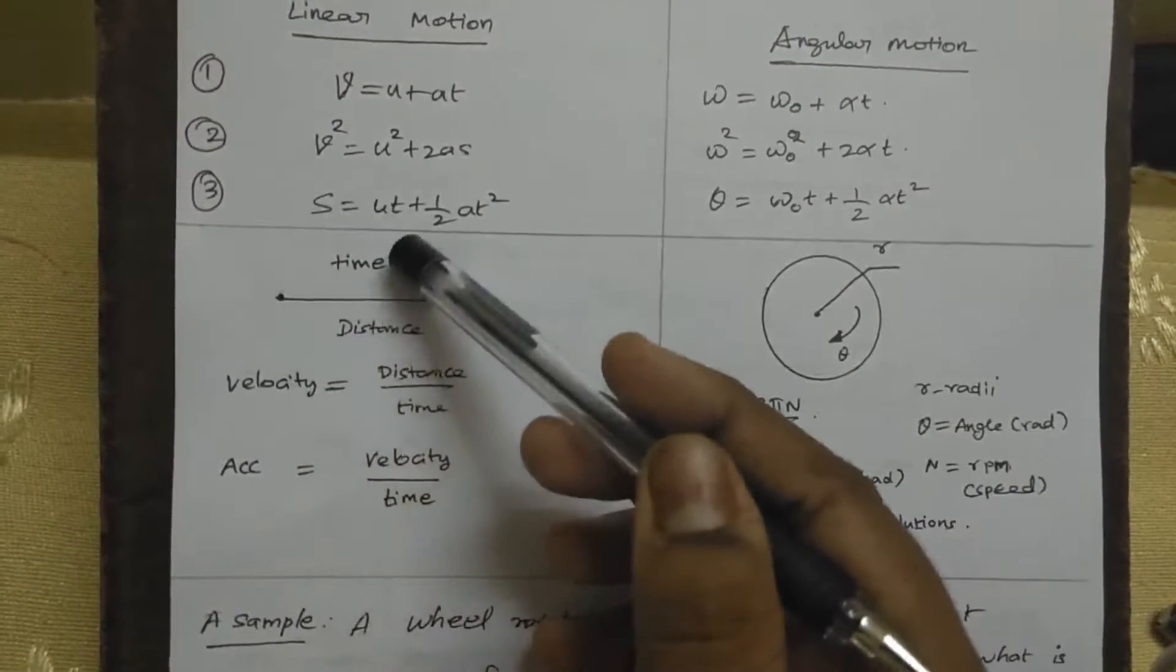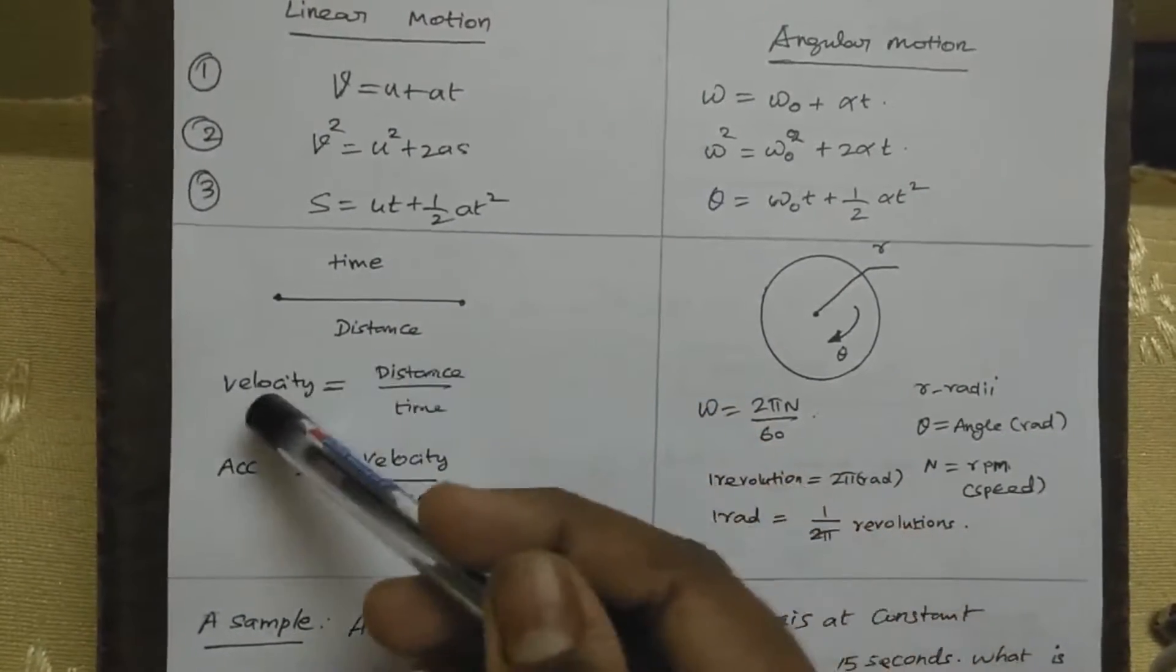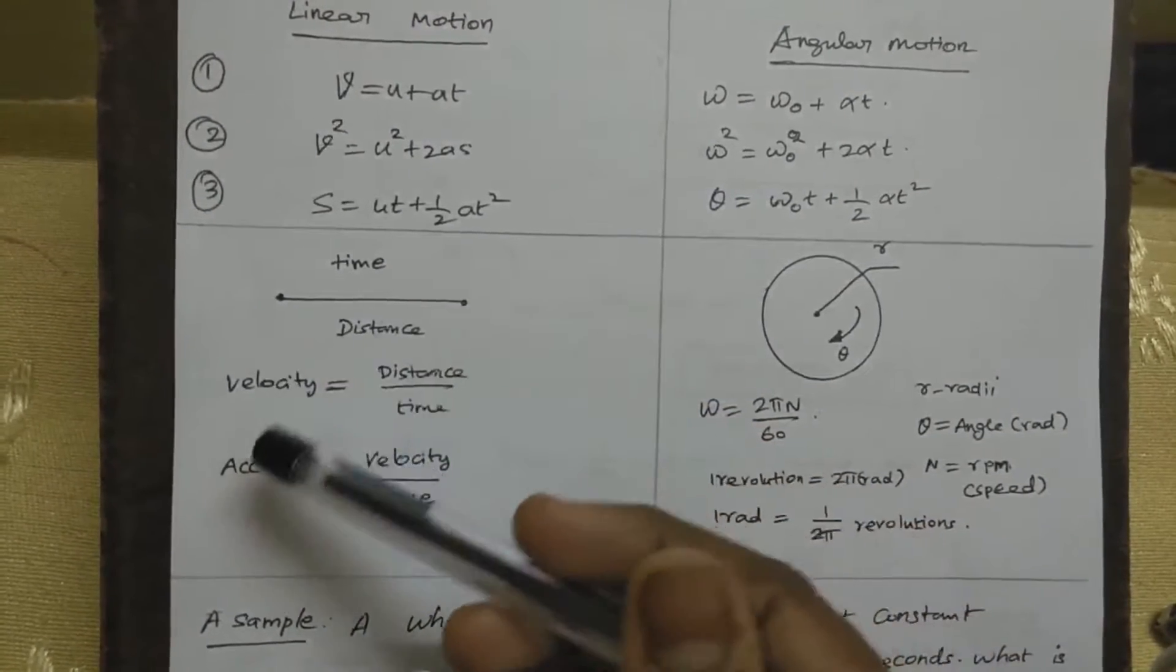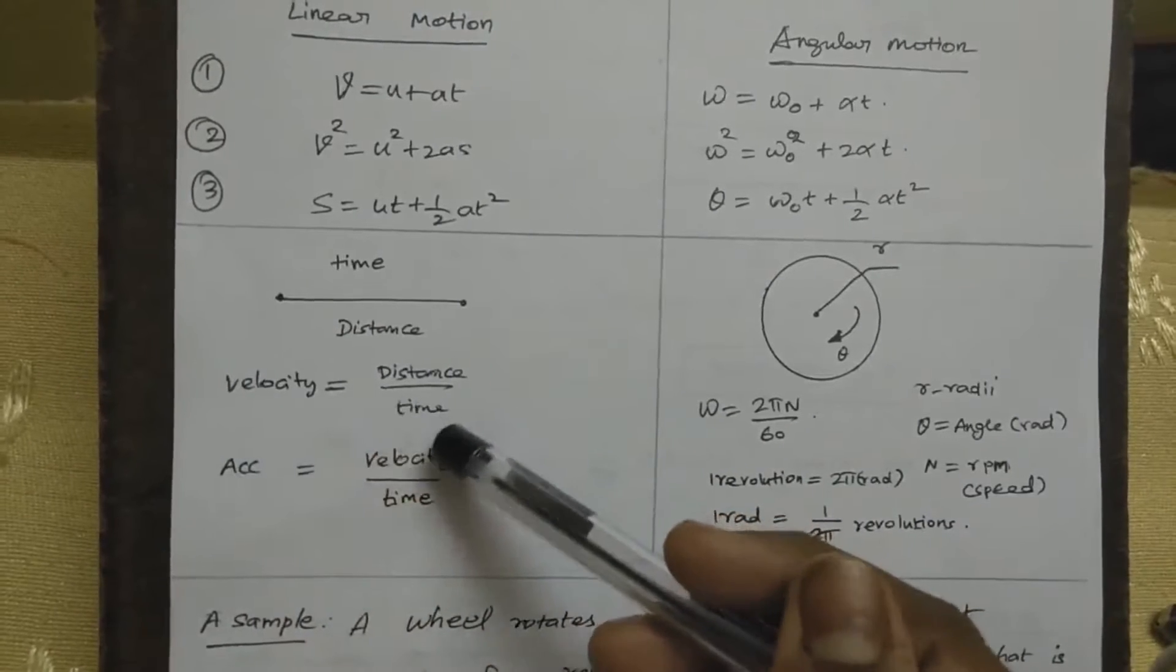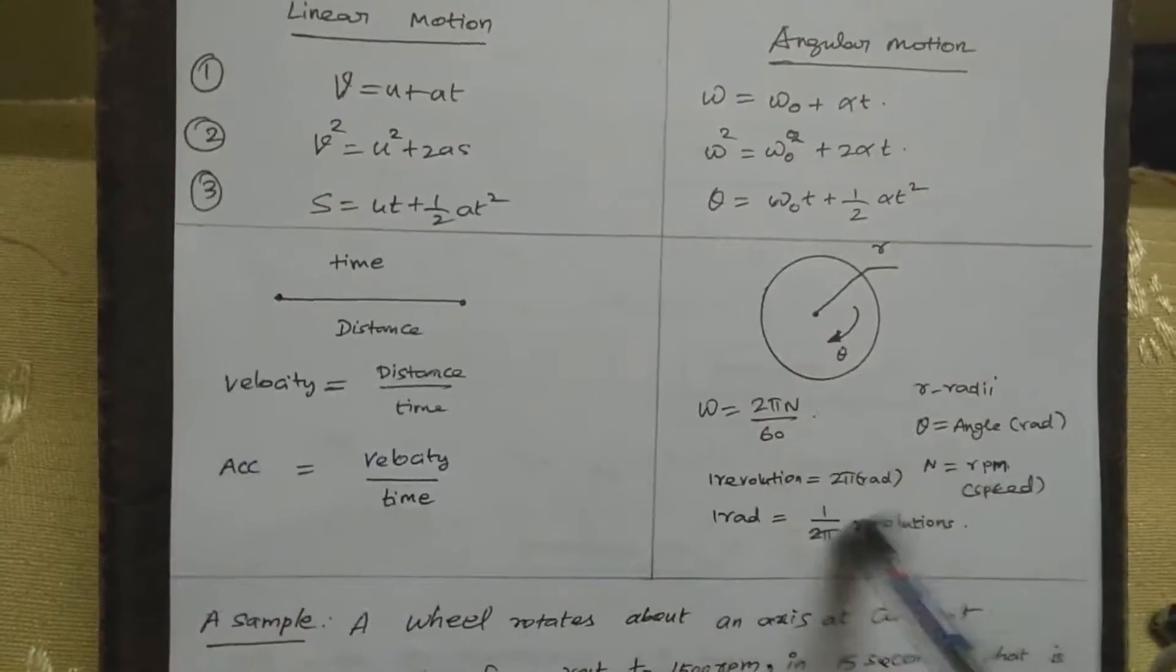For a certain time, you will get the velocity equal to distance divided by time taken. You will get the value of velocity and acceleration. Acceleration is going to bring the velocity divided by time.